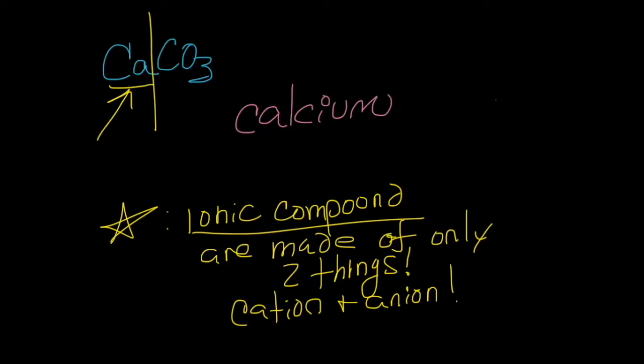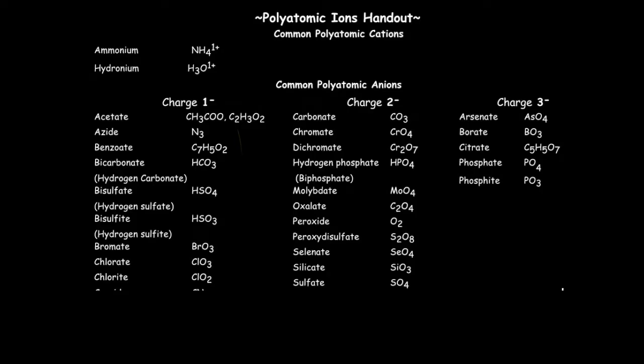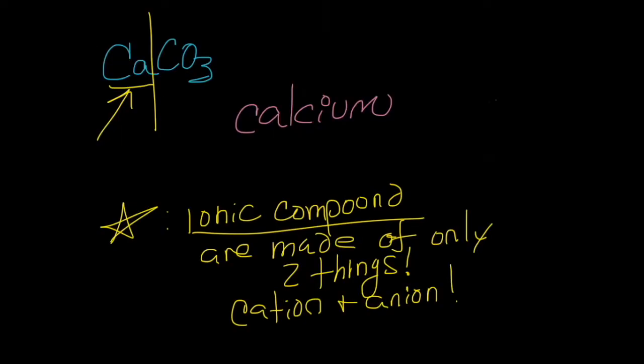Then we need to find the anion. Capital C, capital O, and a 3. That is definitely not off the periodic table. So let's refer back to the polyatomic ion handout and see if we can find the CO3. And I see one right there. CO3 is carbonate. Which means the name of this guy is calcium carbonate. Not too bad.